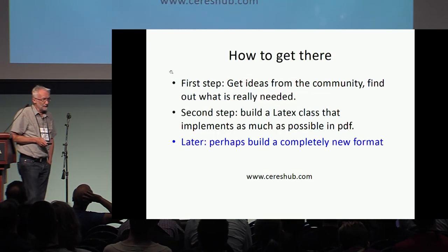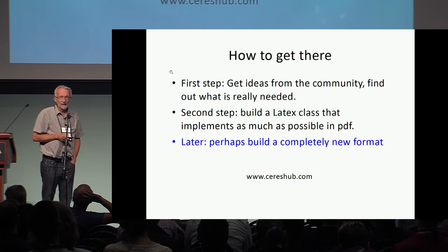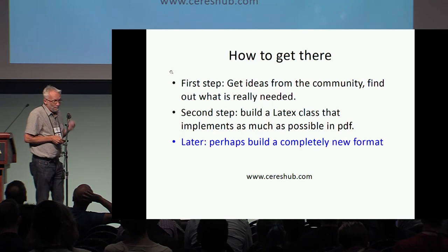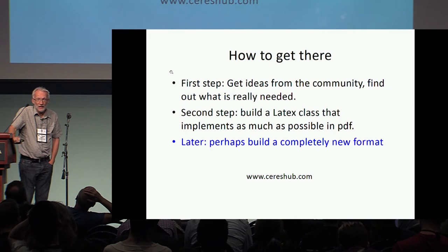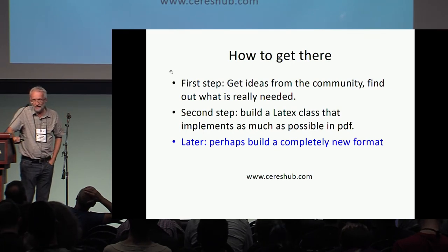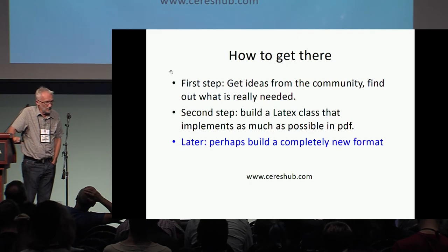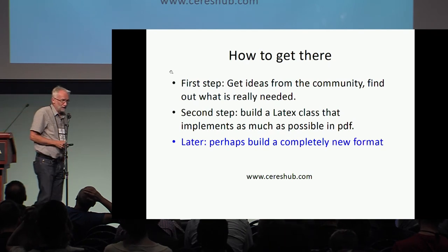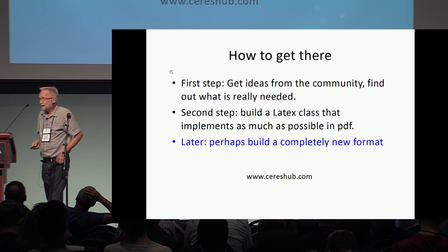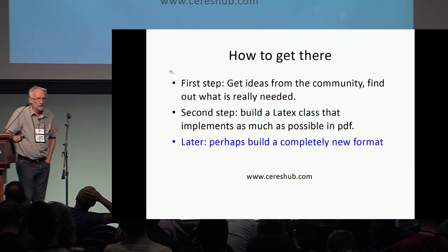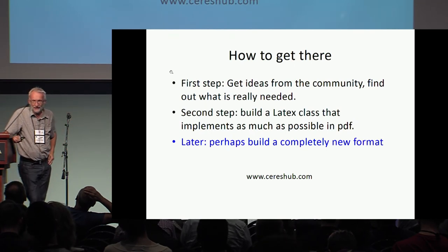So, how do we get there? Well, the first step, we think, is to get ideas from people. We're doing this already a little bit — find out what's actually needed. The second step, we think, might be a LaTeX class. It implements as much of this as is possible in PDF, and some rudimentary versions of this are actually available, and more might be possible. And later on — who knows when — perhaps we have to build a completely new format, or it might just be an annotated PDF with a viewer that runs in your browser and lets you see all these nice interfaces.